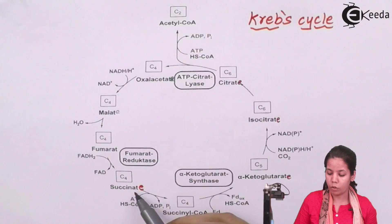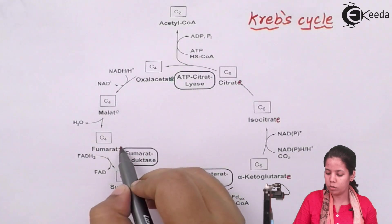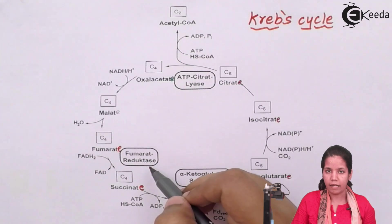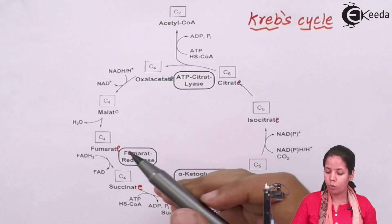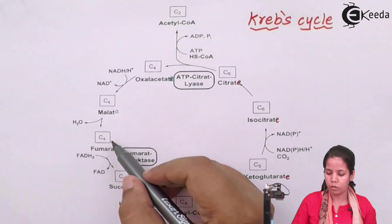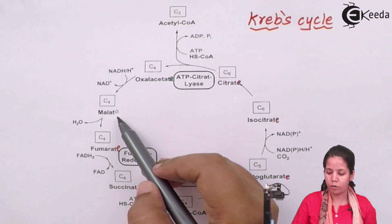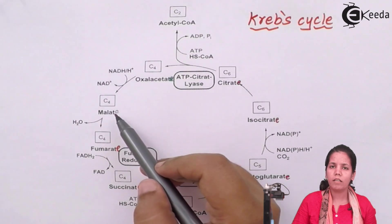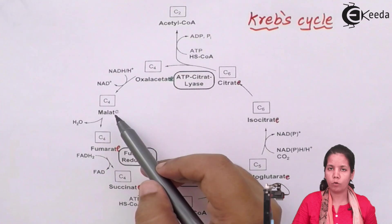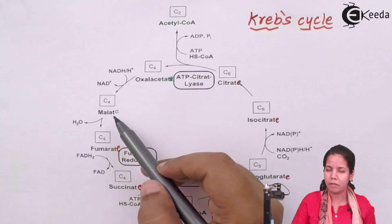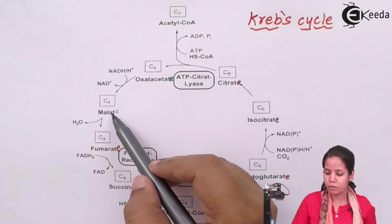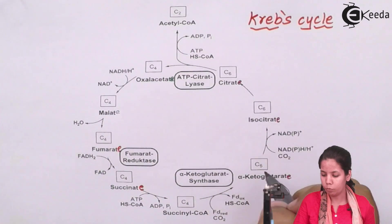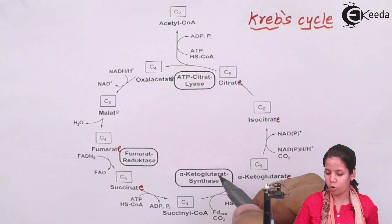Succinyl-CoA gets converted into succinate, another 4-carbon molecule. Succinate is then broken down into fumarate in the presence of the enzyme fumarate reductase. Once fumarate is formed, this 4-carbon molecule is further converted into malate — you may recall malate from photorespiration in photosynthesis. Malate is further broken down into oxaloacetate, and this is how the Krebs cycle completes its loop.